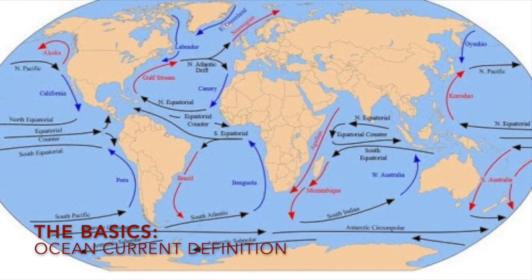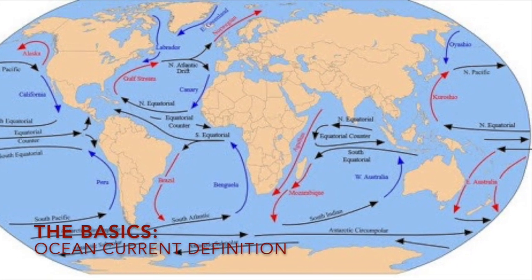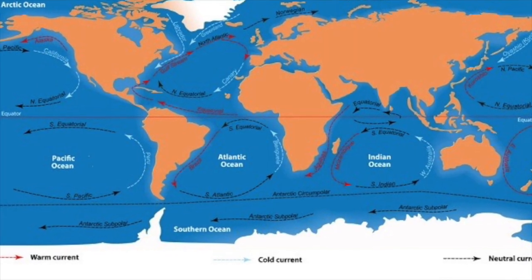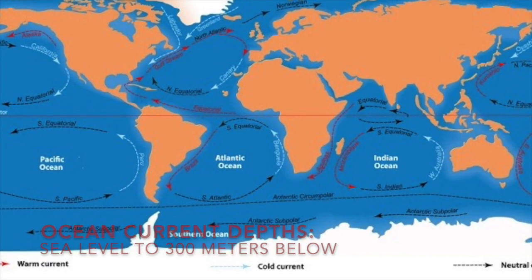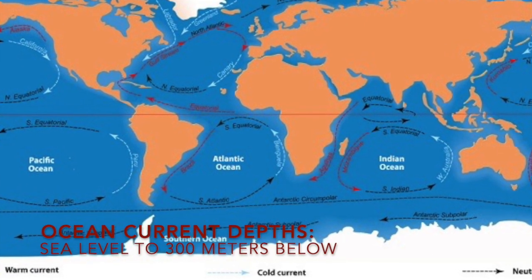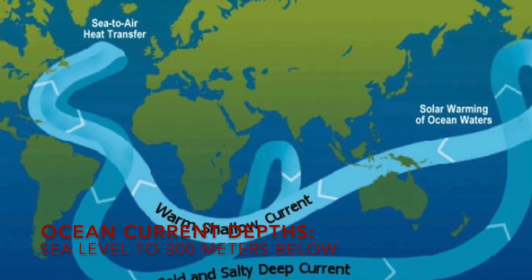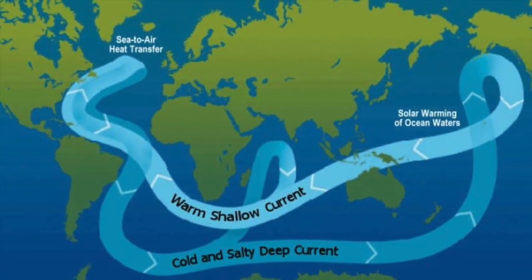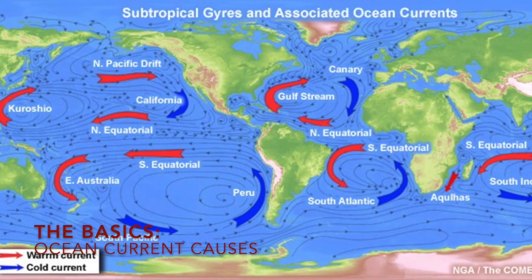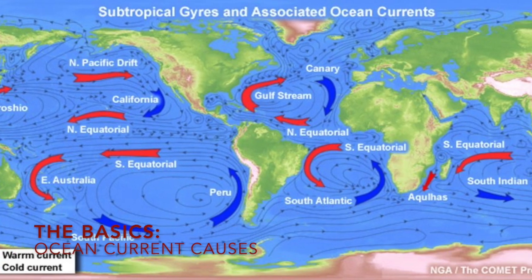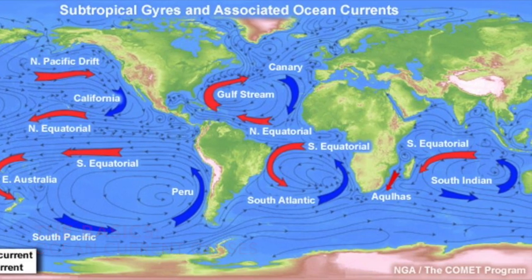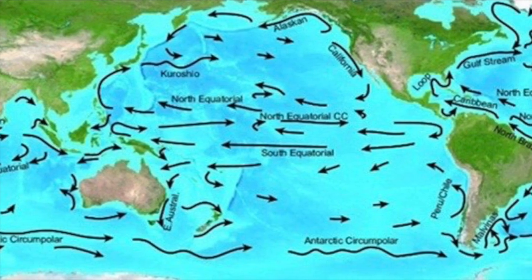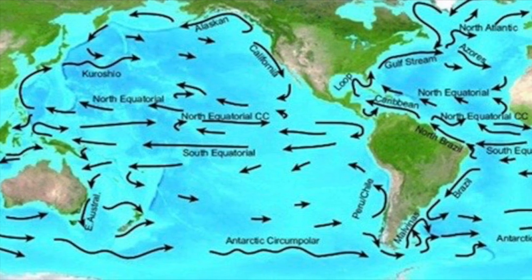Let's start with the basics. Ocean currents are continuous, directed movements of ocean water. Ocean currents can flow on the surface and up to 300 meters below the surface. The factors that influence ocean currents are wind, water density, tides, and the Coriolis effect.